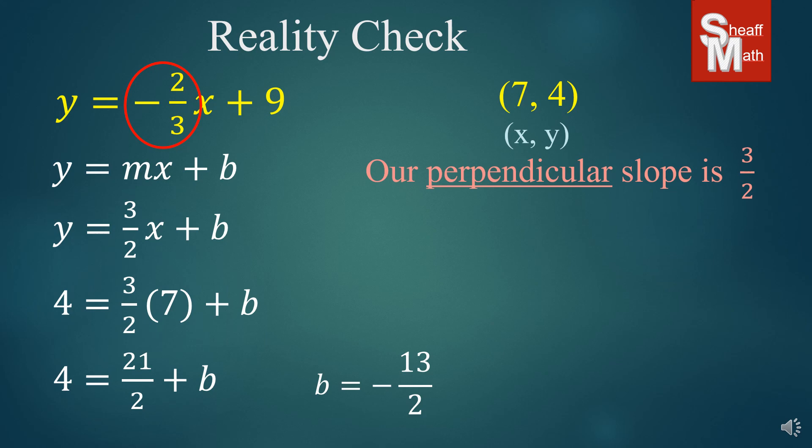We take that negative 13 over 2, put it in for the b. And there is our answer, y equals 3 over 2x minus 13 over 2. Just realize that you're going to have to do some more difficult problems sometimes on tests and on electronic assignments as well.